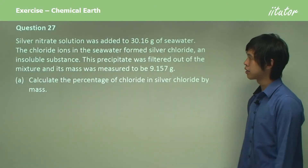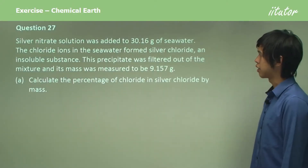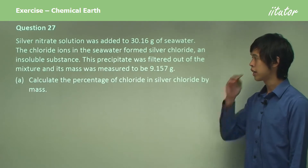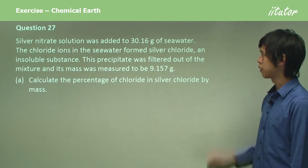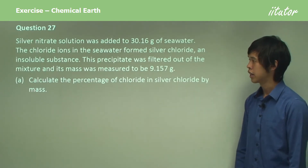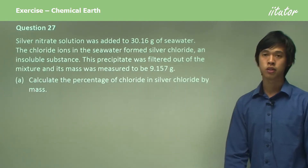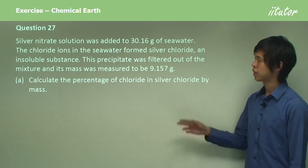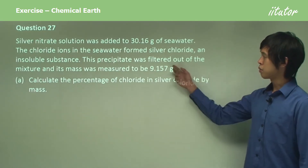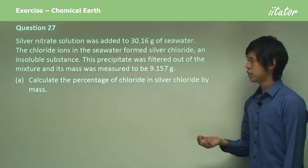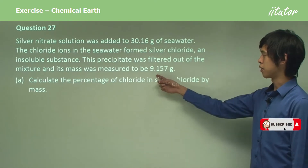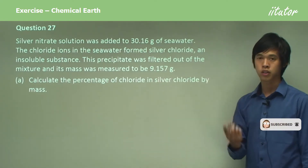Silver nitrate solution was added to 30.16 grams of seawater. The chloride ions in the seawater form silver chloride, an insoluble substance. This precipitate was filtered out of the mixture and its mass was measured to be 9.157 grams.